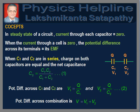Before proceeding to solve the problem, let us recall the related concepts. In an electric circuit containing capacitors, current through each capacitor is equal to zero in steady state. When the current through a cell is zero, the potential difference across its terminals is equal to its EMF. When C1 and C2 are connected in series, the charge on both capacitors are equal and the net capacitance is given in equation 1. Potential differences across C1 and C2 are given in equation 2, and the potential difference across the combination is V = V1 + V2.